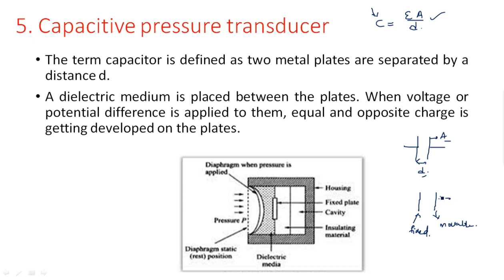Pressure P1 is applied from one side onto the mobile plate. When pressure is applied, the mobile plate moves inward; when released, it comes back out. This causes parameter d to either increase or decrease depending on the direction of applied pressure. When d increases, capacitance C decreases; when d decreases, capacitance increases. This change in plate position affects the capacitance value, which changes the resultant electrical quantities like voltage or current.